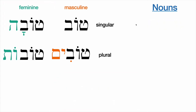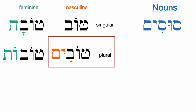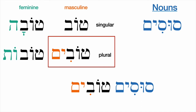Let's do two more. Susim — this is plural and masculine. If sus was one horse, susim is several horses. It's masculine and plural, so we need a masculine plural adjective: susim tovim — good horses.